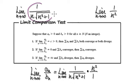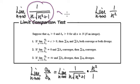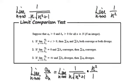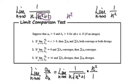Looking at this, as n heads towards infinity, this expression here will act like a simpler form. Because as n heads towards infinity, n is going to get bigger and bigger, and you're adding a minute amount. So this term will act as n squared, and this term will also act as n squared. You square root n squared to get n, then multiply by n, giving n squared. So you've got 1 over n squared.